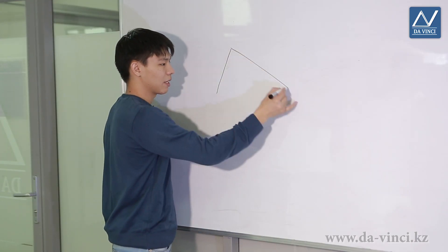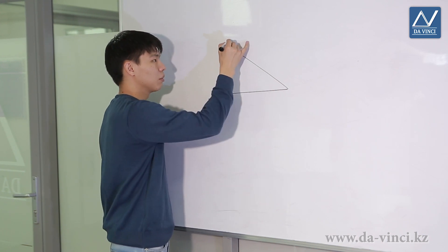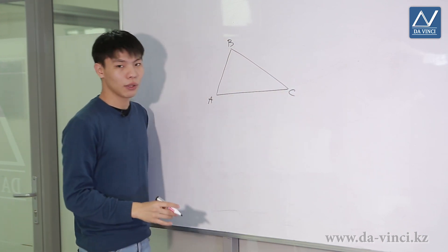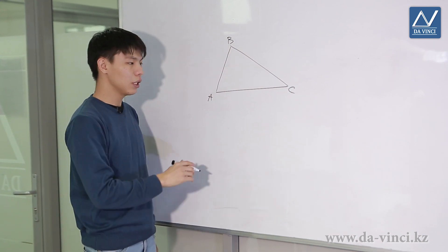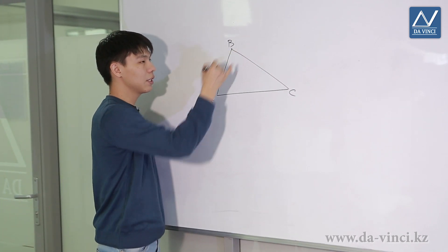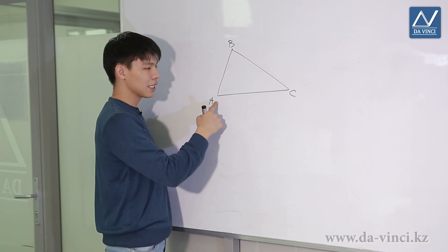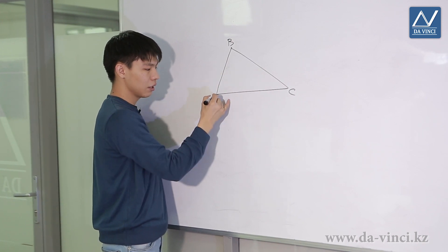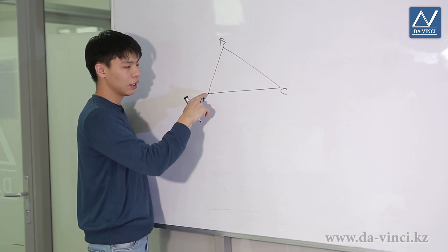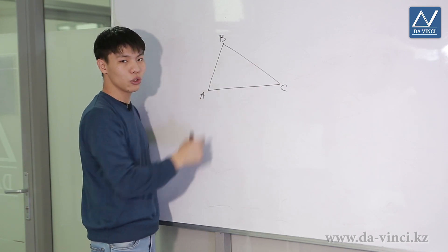Let's consider the concept of a bisector. Let's have a triangle ABC. We already know what the bisector of an angle is — it is the ray that divides the angle in half. In the case of a triangle, the bisector of a triangle is the segment of the angle of the triangle that connects the vertex of that angle to a point on the opposite side.